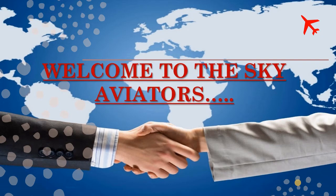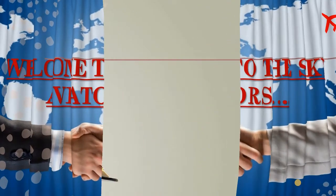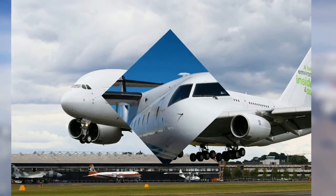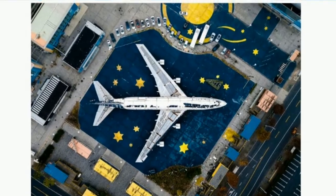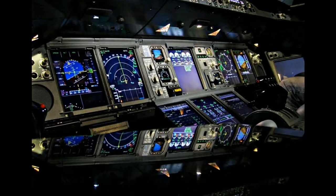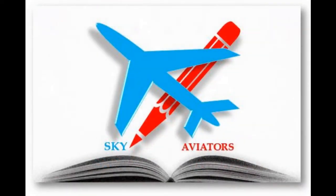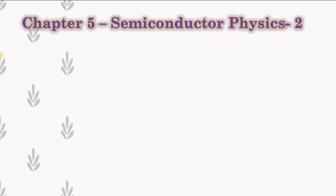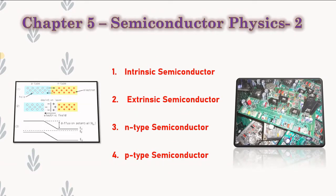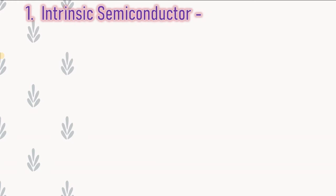Welcome to my new YouTube channel SKYGATERS. Today we are going to start Part 2 of Chapter 5: Semiconductor Physics. There are four topics to cover: intrinsic semiconductor, extrinsic semiconductor, n-type semiconductor, and p-type semiconductor. Before starting, please like, share, and subscribe to the channel, and do watch my previous video on Semiconductor Physics Part 1.